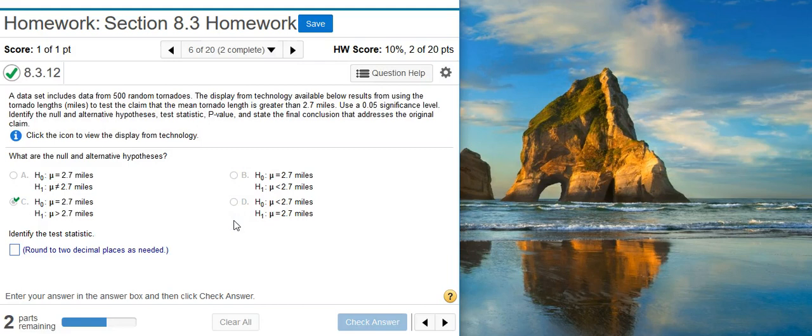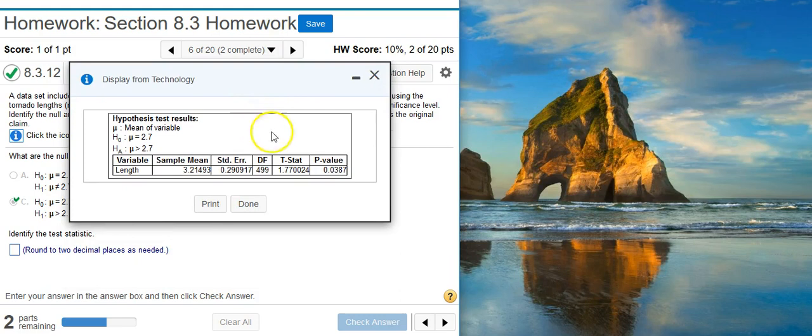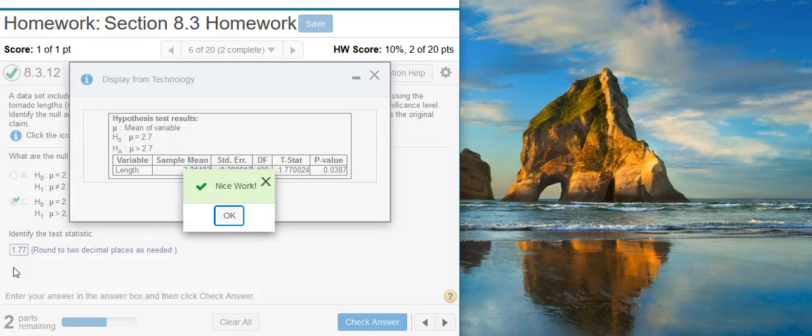Now we're asked to identify the test statistic. Normally, in a problem like this, we would have data and we'd dump it into StatCrunch, and we'd use StatCrunch to give us the results. In this case, we don't need to do that because if we click on this icon, we have this display from technology which already gives us what we need. So here's our test statistic, located here, the t-stat. We're asked to round to two decimal places. Nice work!